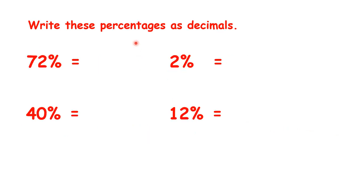Now, pause the video and write these as decimals. We have 0.72, 0.4, 0.02, and 0.12.